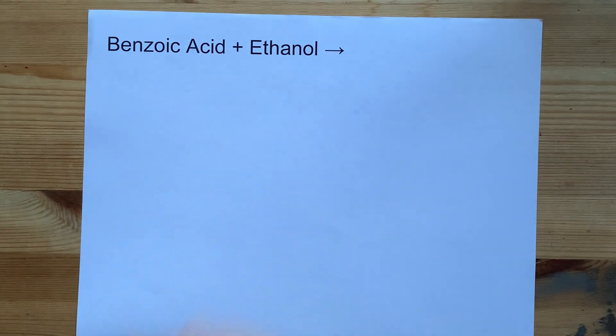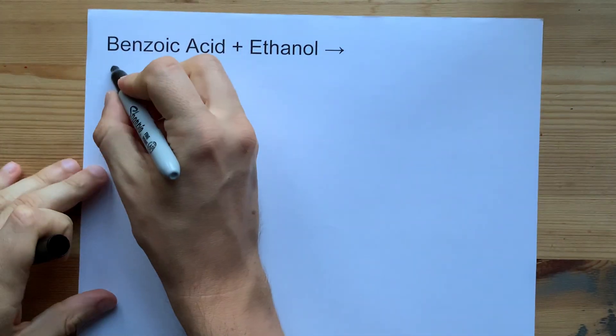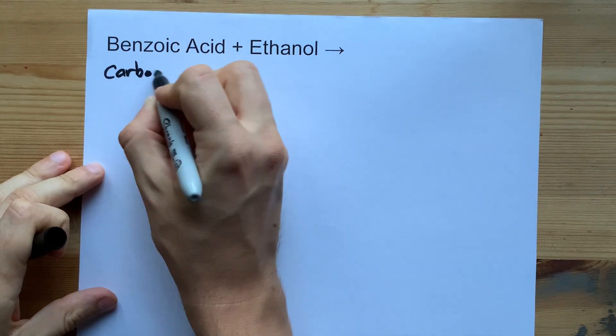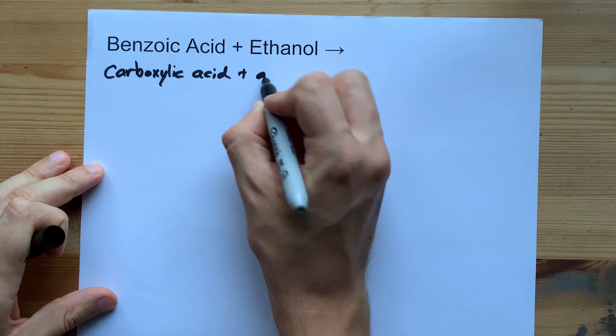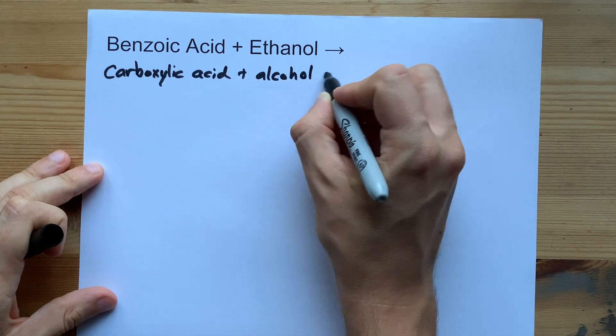What do you get when you mix benzoic acid with ethanol? Well, I want you to know that anytime you mix a carboxylic acid with an alcohol, you're going to end up with an ester.